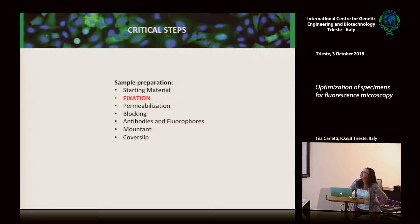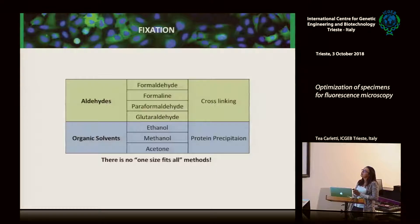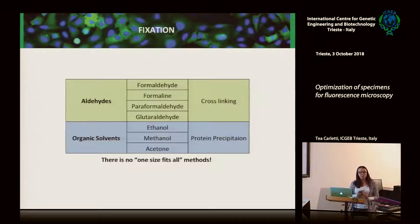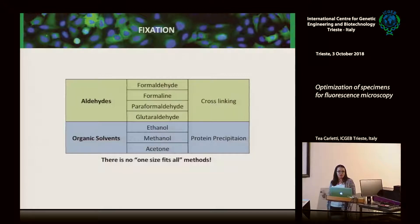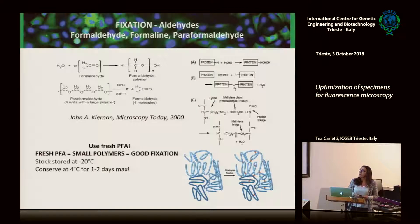We finally have our beautiful cells — we can fix them. For fixing cells you can choose several reagents; mainly for immunofluorescence these are aldehydes and organic solvents. They have different ways of working: aldehydes cross-link proteins, while organic solvents preserve your samples by dehydration and protein precipitation. I want to focus a little bit more on aldehydes, because that is the part where I have more experience.